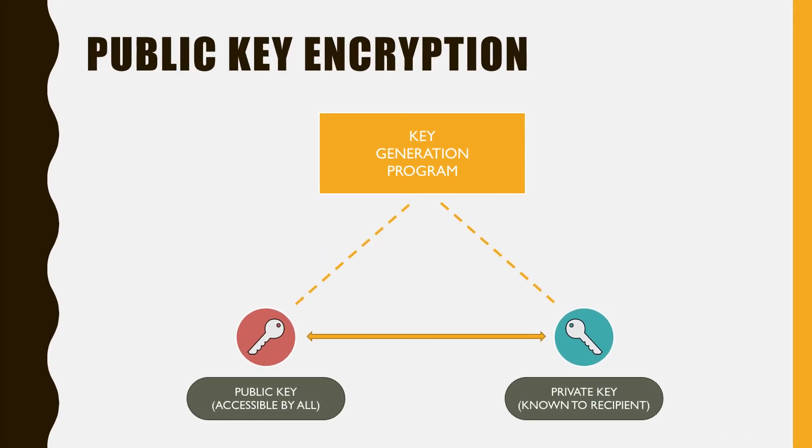In 1976 this problem was addressed and a solution was born called public key encryption. Under this system there are two related keys: a public key that is accessible by all and a private key known only to the recipient. Unlike symmetric encryption it does not require a secure channel for the exchange of each key, as it is virtually impossible for third parties to determine the key's algorithm.